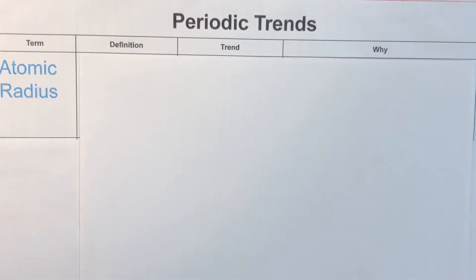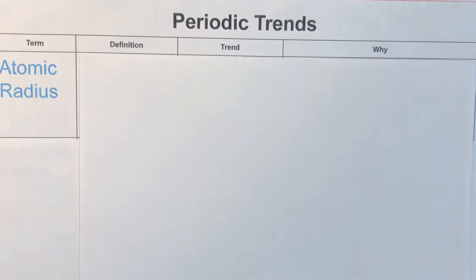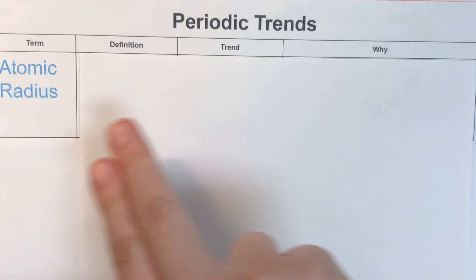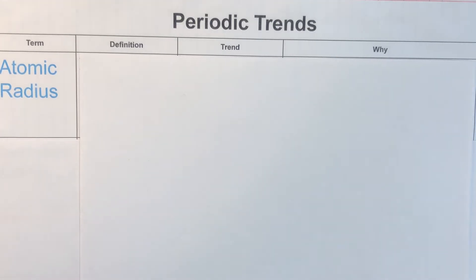Today we're going to be talking about the different periodic trends that we see on our periodic table. This is going to be a table, and we have four columns here, and we're going to go through each of the rows.